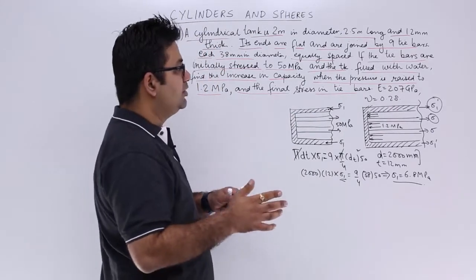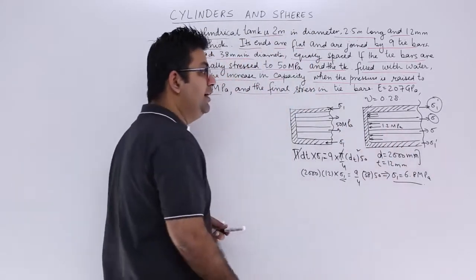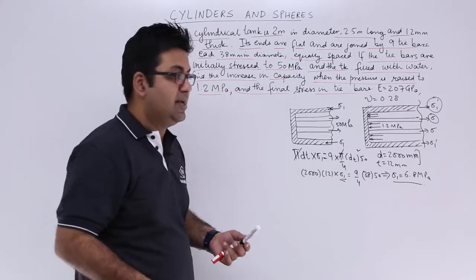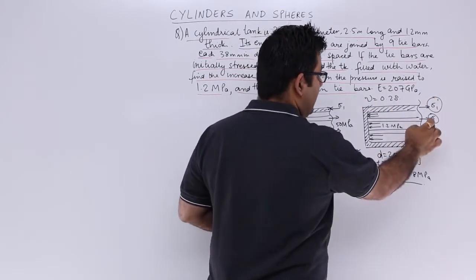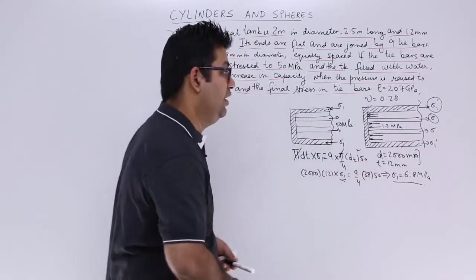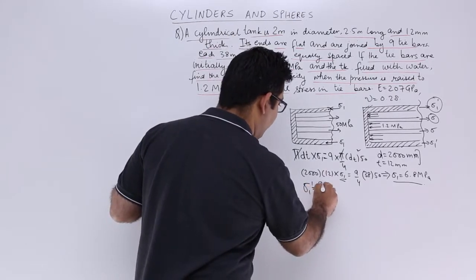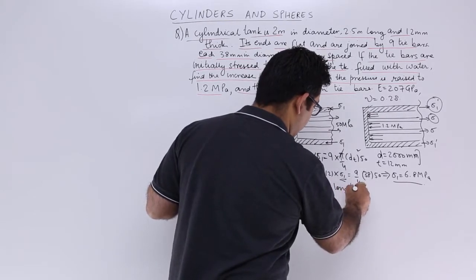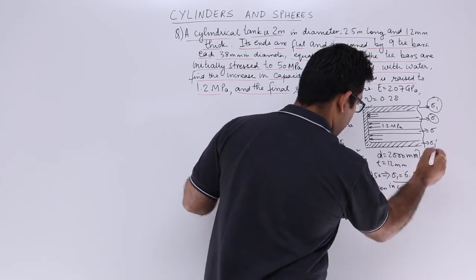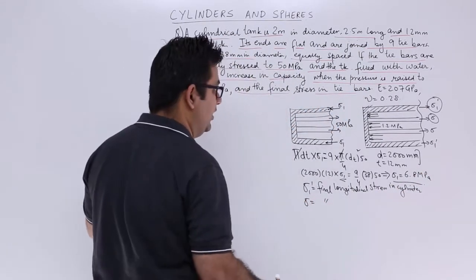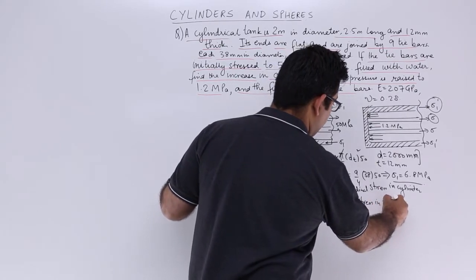We assume there is no hoop stress initially because there is no internal pressure. After the internal pressure is applied, the compressive stress changes and becomes sigma_1_dash, now in the tensile direction. The tie rod stress increases from 50 MPa to sigma. Here, sigma_1_dash is the final longitudinal stress in the cylinder, and sigma is the final tensile stress in the tie rod.